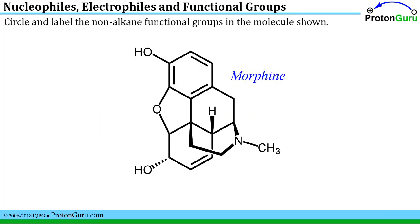This first problem shows us a relatively complicated molecule. In this case, it's morphine, and it asks us to circle and label the non-alkane functional groups in the molecule.